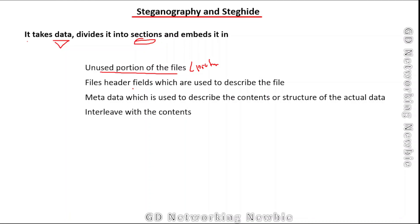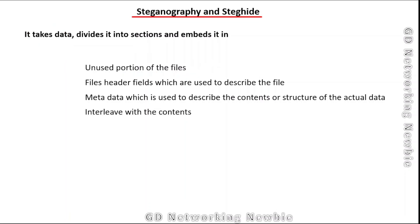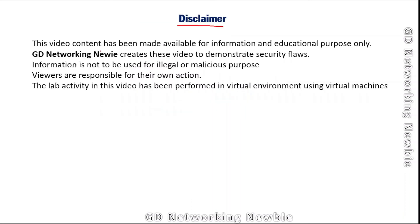The picture is made of different pixels, and those pixels are combinations of different colors. To represent those colors we need bits — some bits represent the color, and some bits can be used to carry or hide the data we want to embed. That is the end of this video on steganography and steghide. Thank you for your time and hope to see you in another video. This content has been made available for information and educational purposes only, and viewers are responsible for their own actions.